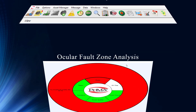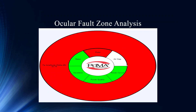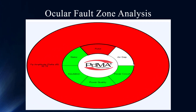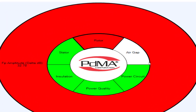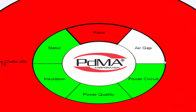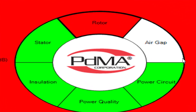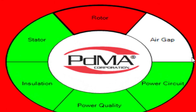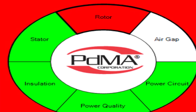When we click that, it's going to send us directly to this screen here — it's called our ocular fault zone. If you see anything, we usually say red is bad, and there's a lot of red on this fault zone. You can see we've split this up into our six fault zones, so we have all six covered here. I see 32.78 pole pass sideband amplitude — what determines that number, what puts that in red?